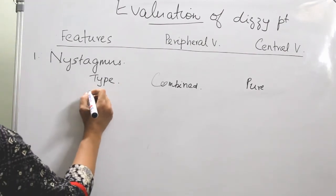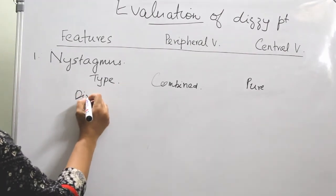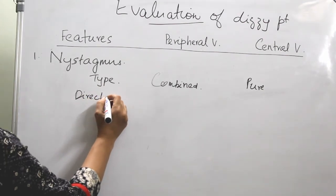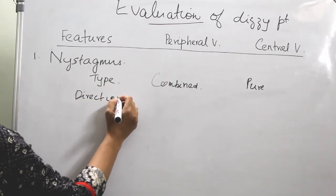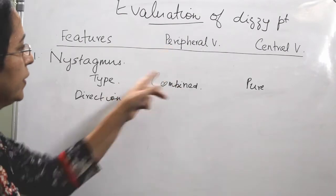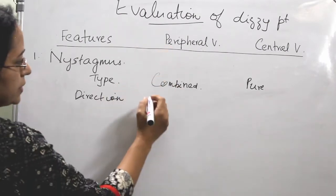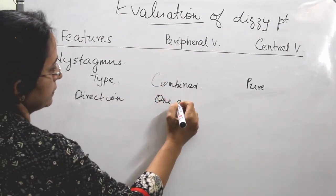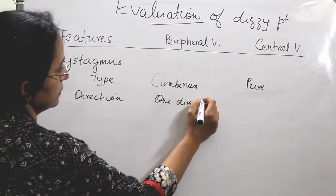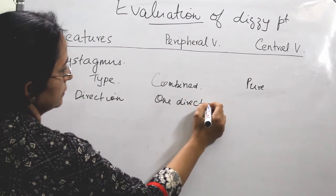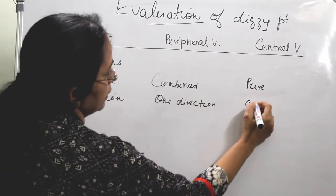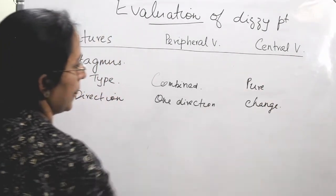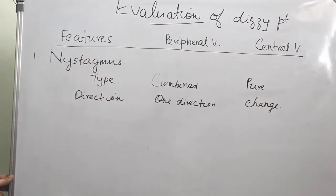Another feature is direction. In peripheral vertigo, the nystagmus is always in one direction. But in central vertigo, it can change direction.